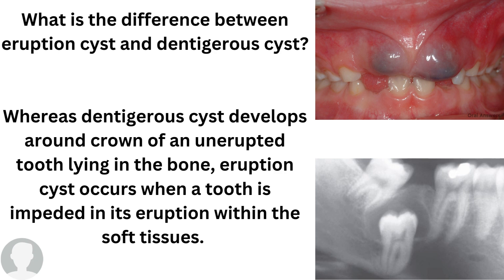Dentigerous cysts are seen in adults, whereas the eruption cyst occurs when a tooth is embedded during eruption within the soft tissues, so it occurs in children — that is the only difference between these two. If asked whether eruption cyst is a synonym for dentigerous cyst, yes, both are synonyms. For children we say eruption cyst; for adults we say dentigerous cyst. Regarding the dentigerous cyst, treatment will be extraction of the affected tooth, because if not extracted, the dentigerous cyst will return repeatedly.